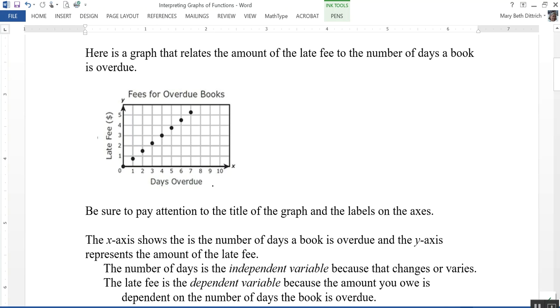The number of days that the book is overdue is the independent variable because that can change or vary. If I just don't get around to returning the book to the library, that's what's going to change. If I'm very diligent and I'm like, oh my gosh, my book is due today, that's why it's independent. The dependent variable is the late fee because how much I have to pay in the late fee depends on how many days overdue the book is.